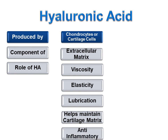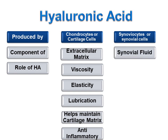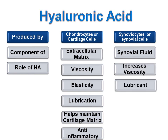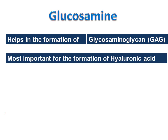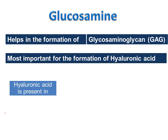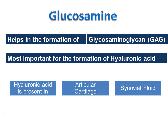Hyaluronic acid has an anti-inflammatory effect. It is also produced by synoviocytes or synovial cells and is a major component of the synovial fluid. Hyaluronic acid increases the viscosity of the synovial fluid and acts as both a lubricant and a shock absorber. Hyaluronic acid is a GAG — that is, a glycosaminoglycan — and glucosamine helps in the formation of GAG. Glucosamine is most important for the formation of hyaluronic acid. As hyaluronic acid is present in both cartilage and synovial fluid, glucosamine has a role in both.